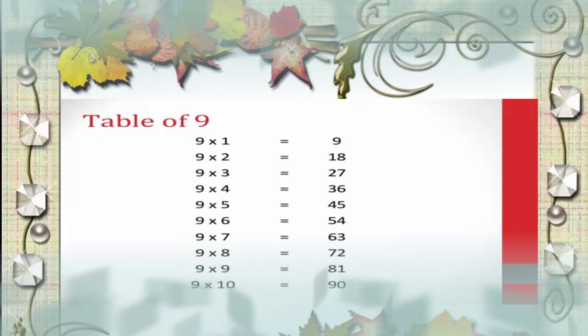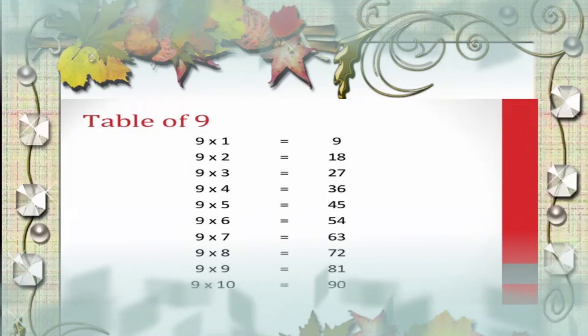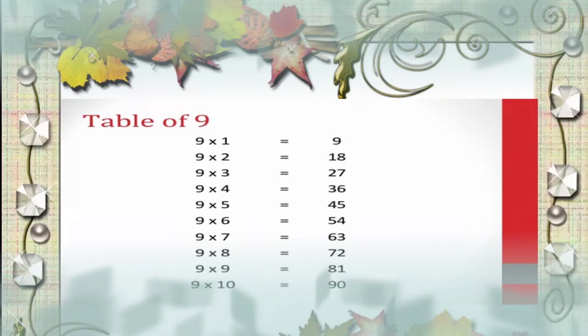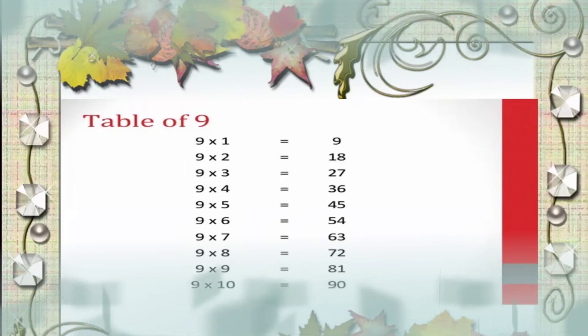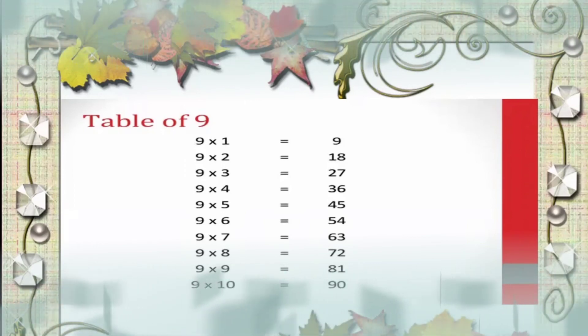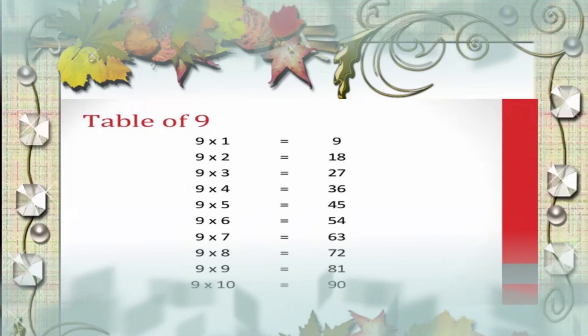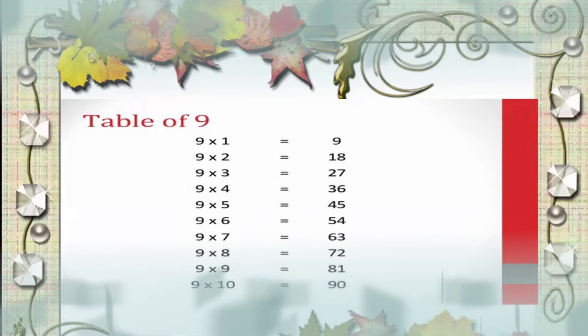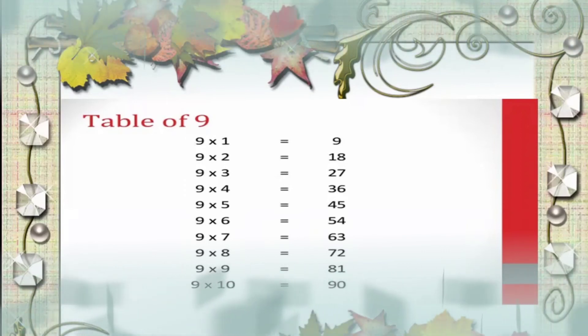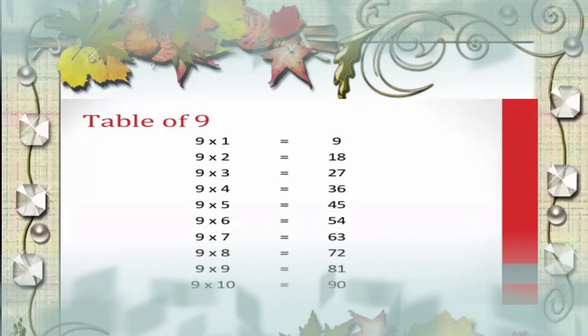Let us repeat. 9 1s are 9, 9 2s are 18, 9 3s are 27, 9 4s are 36, 9 5s are 45, 9 6s are 54, 9 7s are 63, 9 8s are 72, 9 9s are 81.